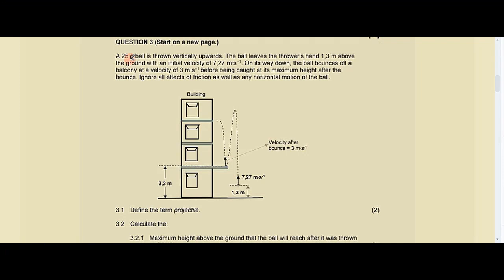We have question 3 on VPM, which is vertical projectile motion. A 25-gram ball is thrown vertically upward. The ball leaves the thrower's hand at 1.3 meters above the ground with an initial velocity of 7.27 meters per second. On its way down, the ball bounces off a balcony at a velocity of 3 meters per second before being caught at its maximum height after the bounce.